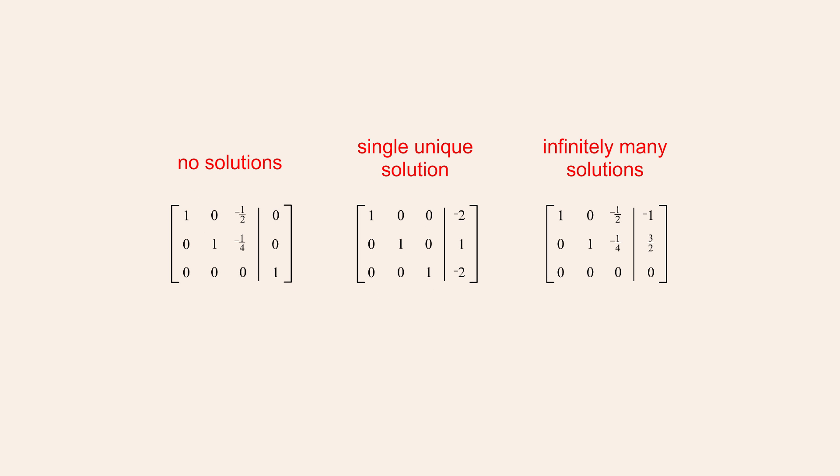Given a reduced row echelon matrix, the first step is to determine if the system is inconsistent, having no solutions. This is easy, since if the matrix contains any row which has all zero coefficient entries and a non-zero constant entry, then the system has no solutions. This can often be determined during Gauss-Jordan elimination even before the process is finished and the matrix is in reduced row echelon form.